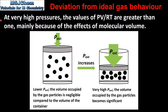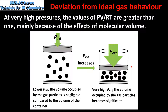At very high pressures, the values of PV over RT are greater than 1. This is mainly because of the effects of molecular volume. At lower external pressures the volume occupied by the gas particles is negligible compared to the volume of the container. At very high external pressures the volume occupied by the gas particles becomes significant. The V in PV over RT is the volume of the container; however, the volume available for the gas particles is less than the container volume. Therefore the product of PV over RT is greater than 1. So to summarize, at very high pressures the deviation from ideal behavior is mainly because of the effects of molecular volume.